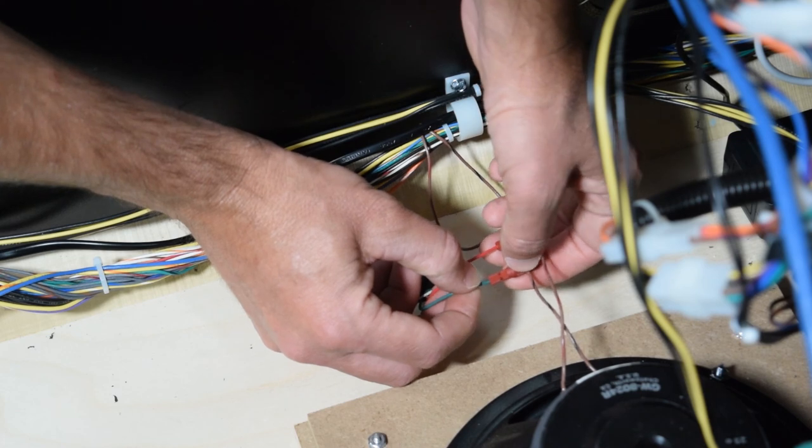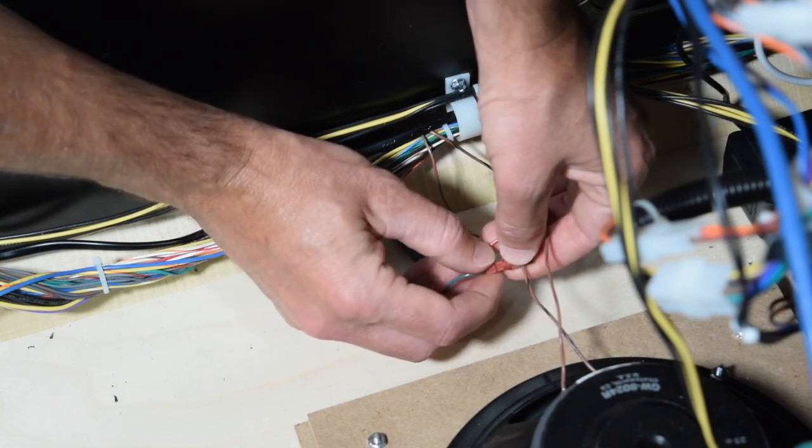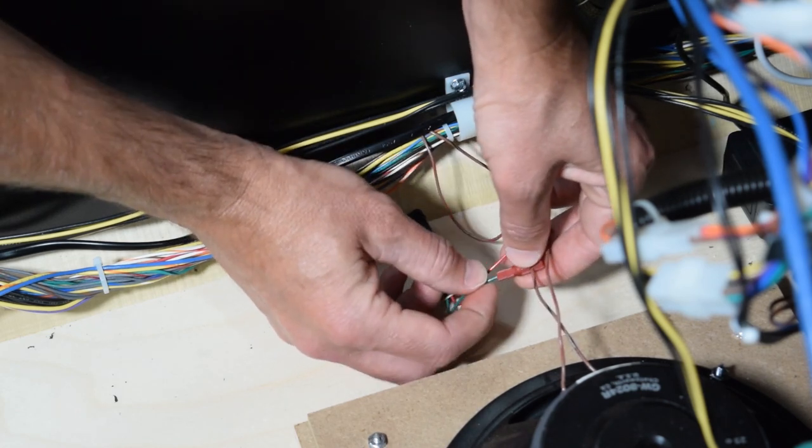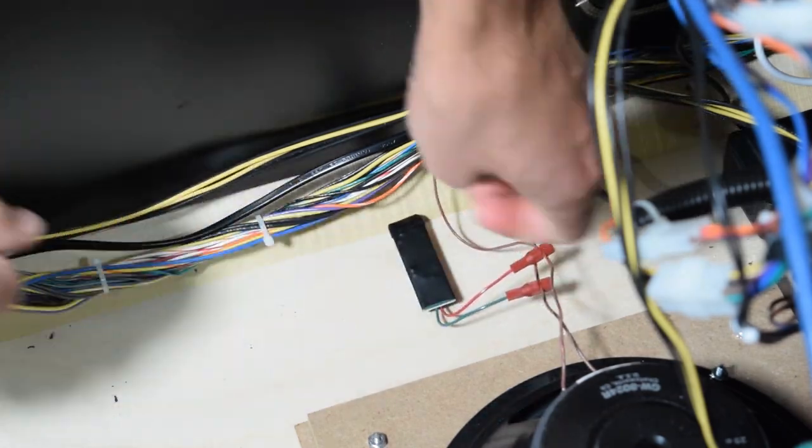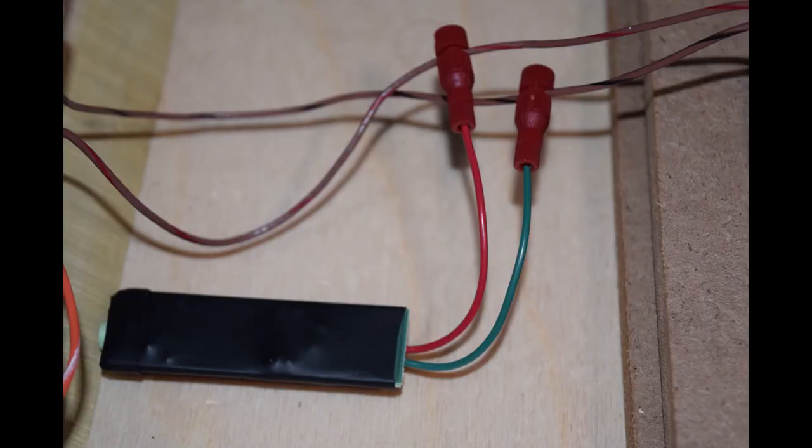If not, loosen the small end of the Positap connector and try again. Repeat this process for the other wire. Here is how it should look once properly installed.